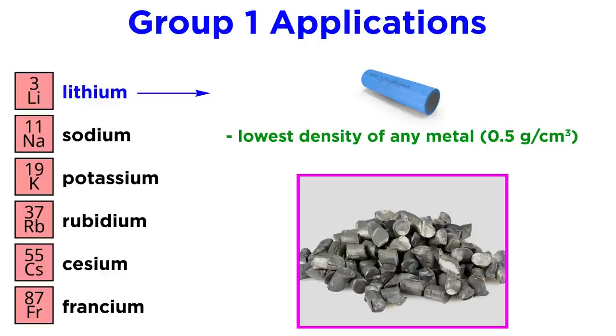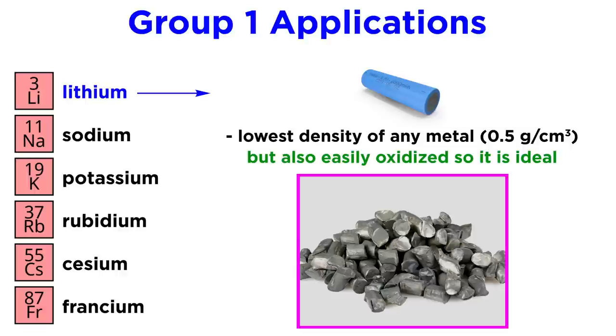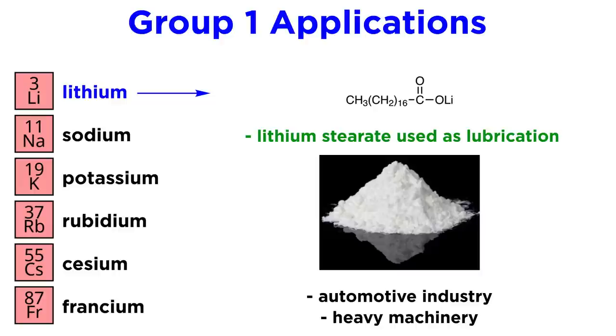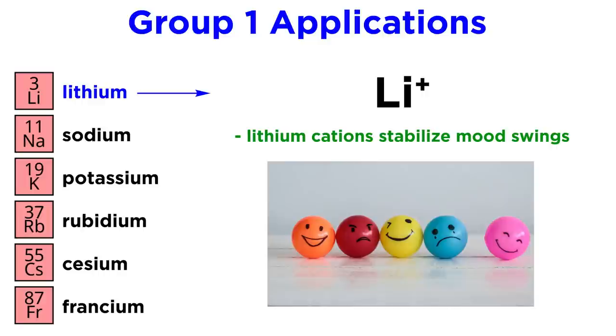Let's now examine some applications. Lithium has tremendous utility in batteries. It is very light, and in fact at 0.5 grams per cubic centimeter has the lowest density of any metal, but it is also easily oxidized, so it is an ideal substance. Lithium is present in certain disposable batteries, as well as rechargeable lithium ion batteries, some of which utilize lithium ions that intercalate, or penetrate, a lattice of cobalt oxide and graphite. Lithium stearate is used in lithium grease for lubrication in the automotive industry and heavy machinery.